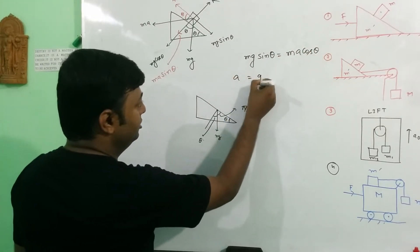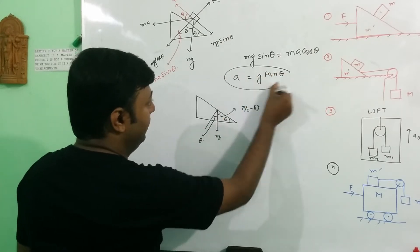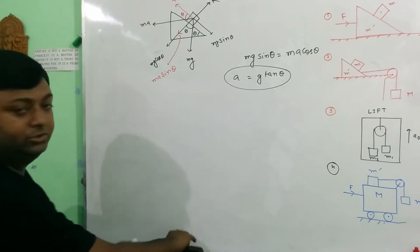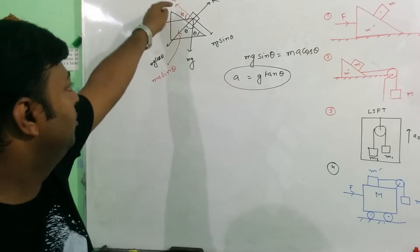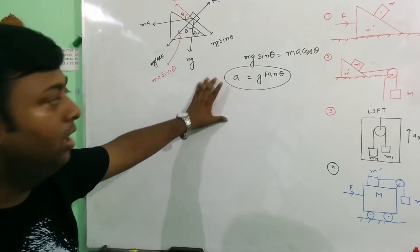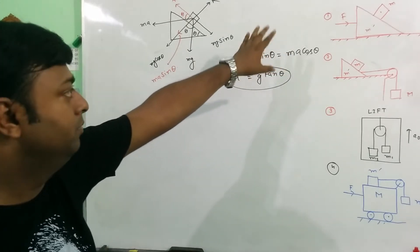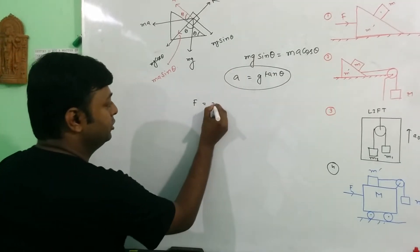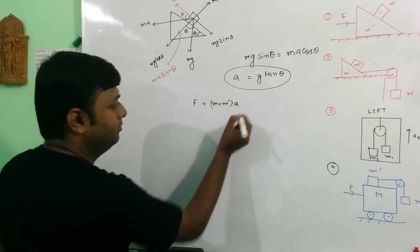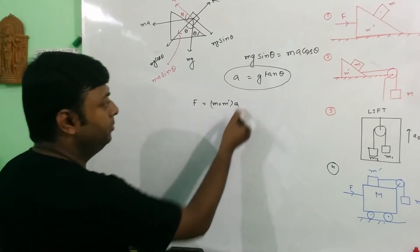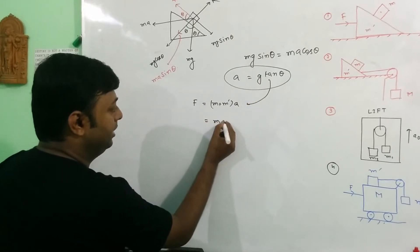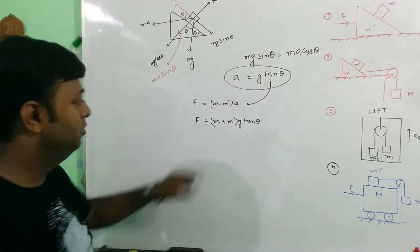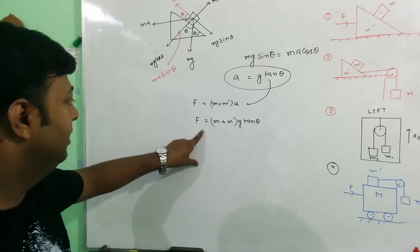That's why a equals g tan theta. This is the acceleration of the particle — the acceleration for which the body is not moving in the downward direction. Now if we want to find out the applied force F, then by Newton's second law of motion, F equals the total mass of the system into acceleration. Putting the value of acceleration, we get the result: F equals (M + m) g tan theta. This is the actual value of force.